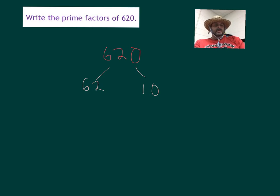So let's deal with the 10 first because that's easy. What are two factors of 10? 2 and 5. There we go. Hey, both of those numbers are prime.